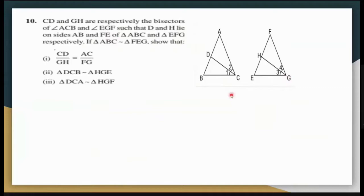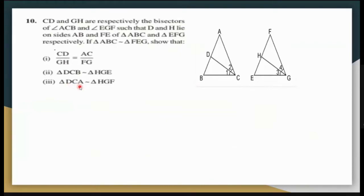Next, triangle DCB similar to triangle HGE: angle B equals angle E from the original similarity, and since the full angles C and G are equal, their halves angle 1 and angle 3 are also equal. Hence the triangles are similar by AA. The third result, triangle DCA similar to triangle HGF, follows from the work already done. All three parts are complete.